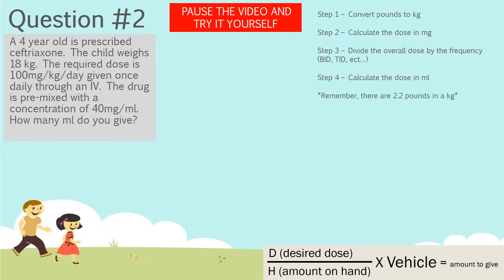Question two — pause the video and try it yourself first. Now let's run through it a bit faster. Step one: convert from pounds to kilograms. This question already gives the child's weight as 18 kilograms, so the conversion is already done for us. I wouldn't consider this skipping the step — the step is just already complete.